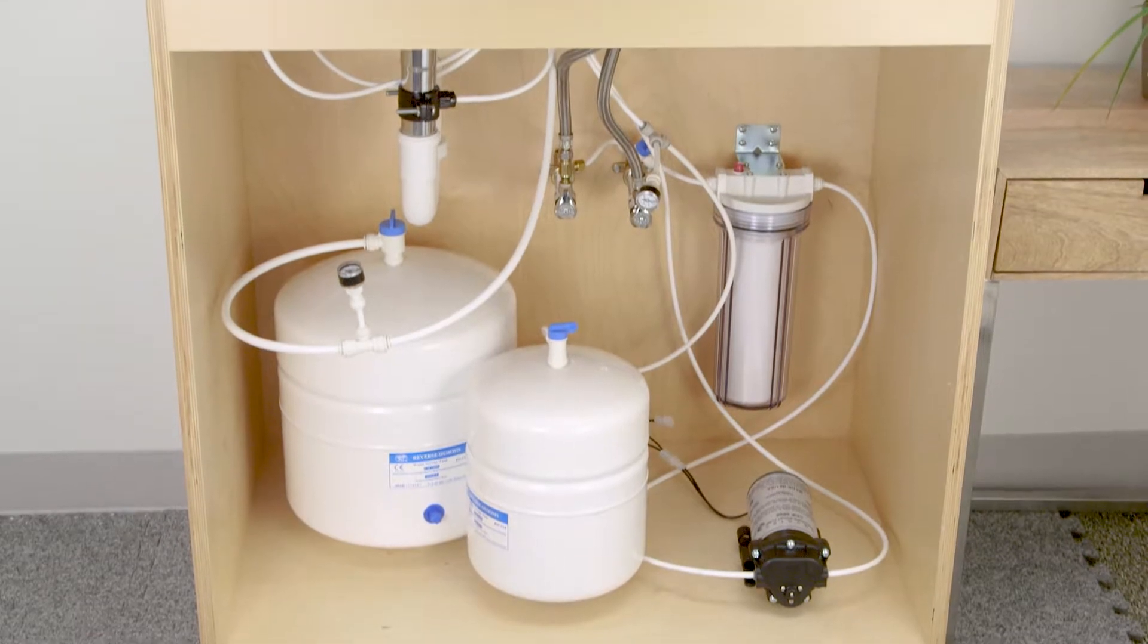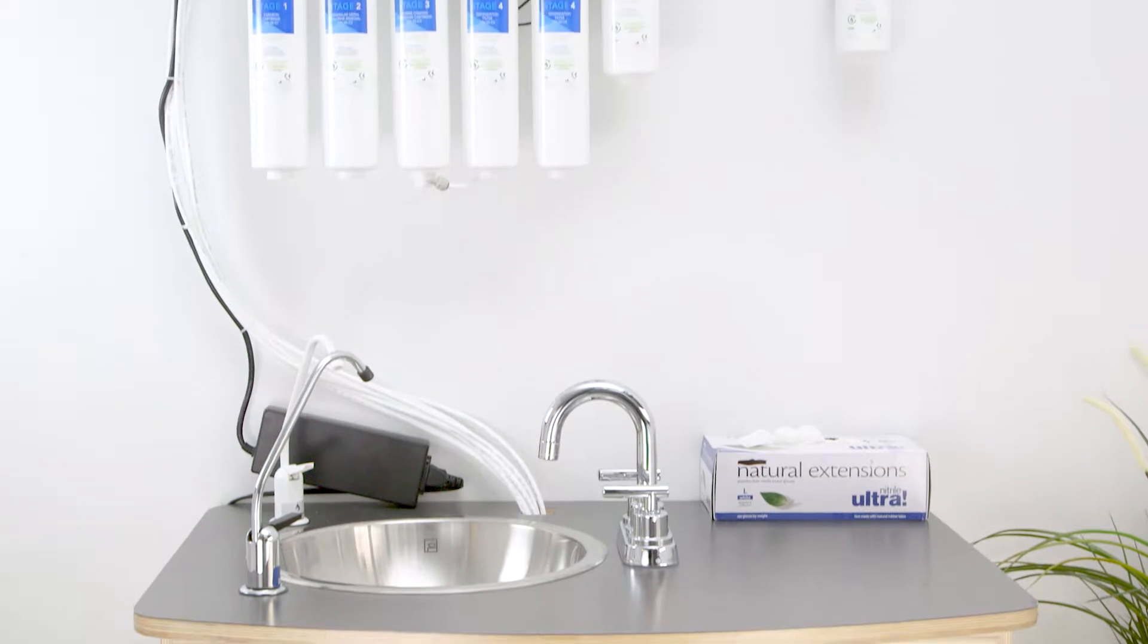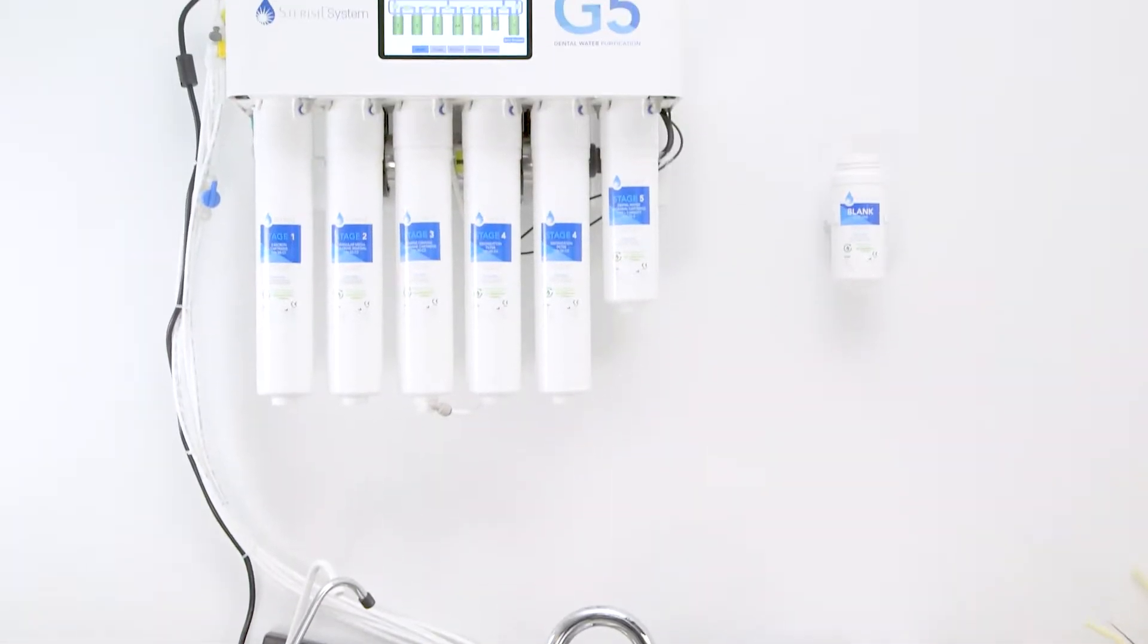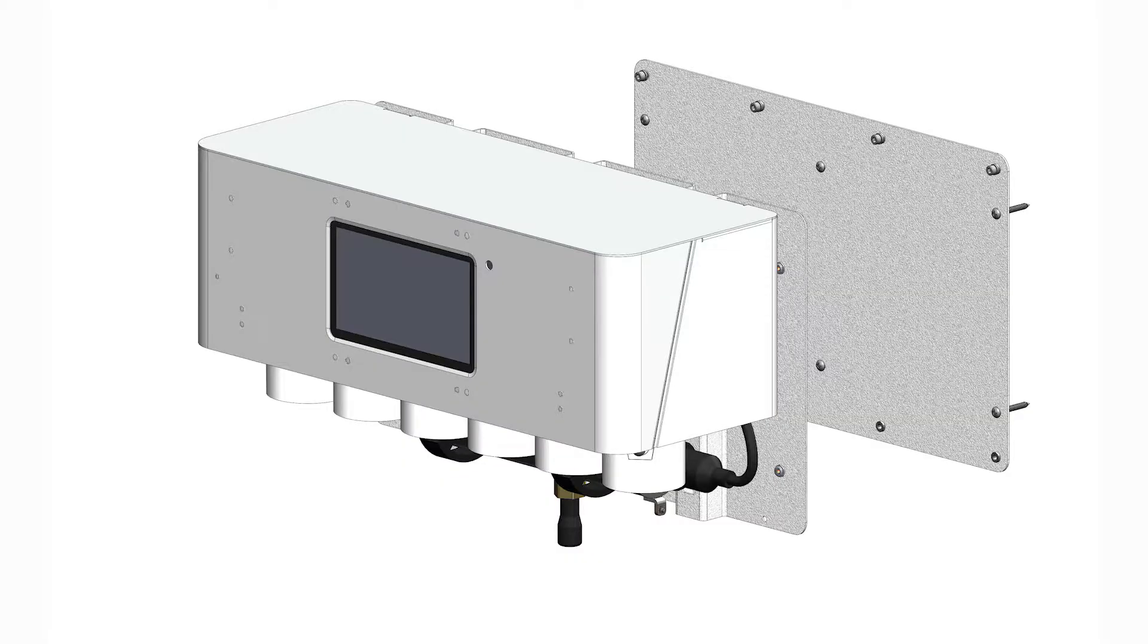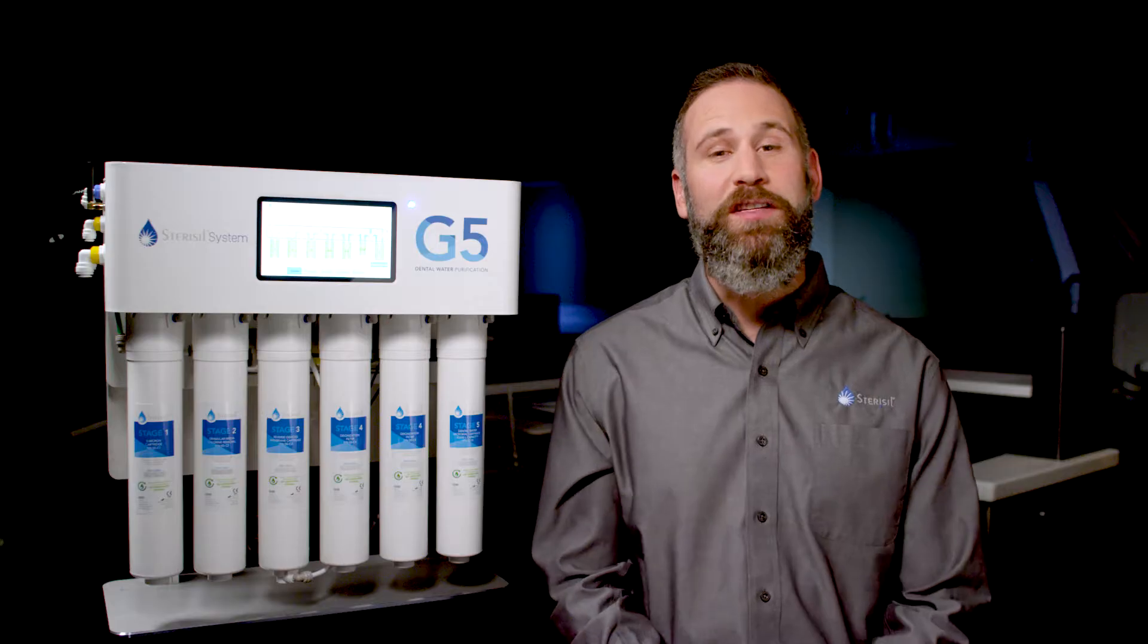The G5 can be mounted in one of three ways: an articulating arm wall mount, a sliding mount inside a cabinet, or a static wall mount. In this demonstration, we'll use the static wall mount method. The system weighs approximately 50 pounds when filled with water. For this reason, confirm the location of studs for proper anchoring.